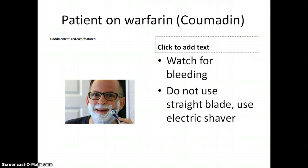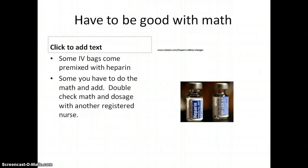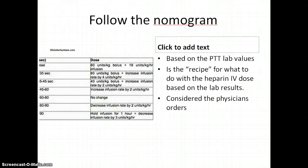If your patient is on Coumadin and we're getting them ready in the morning, we would not let them use a straight blade because they could bleed very easily if they nicked themselves. Your patient with a deep vein thrombosis might be on IV heparin — the label shows 25,000 units per 250 milliliters given as an IV drip. Most bags come premixed but some don't, and you have to be good with math to know how to mix it correctly so your patient gets a therapeutic dose. We use a nomogram — a set order that when your blood level comes back, tells you what to do with the heparin dose.